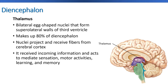The thalamus receives information from afferent pathways, figures out where all that information needs to go, and disseminates it so the brain can interpret the information and develop plans of action.